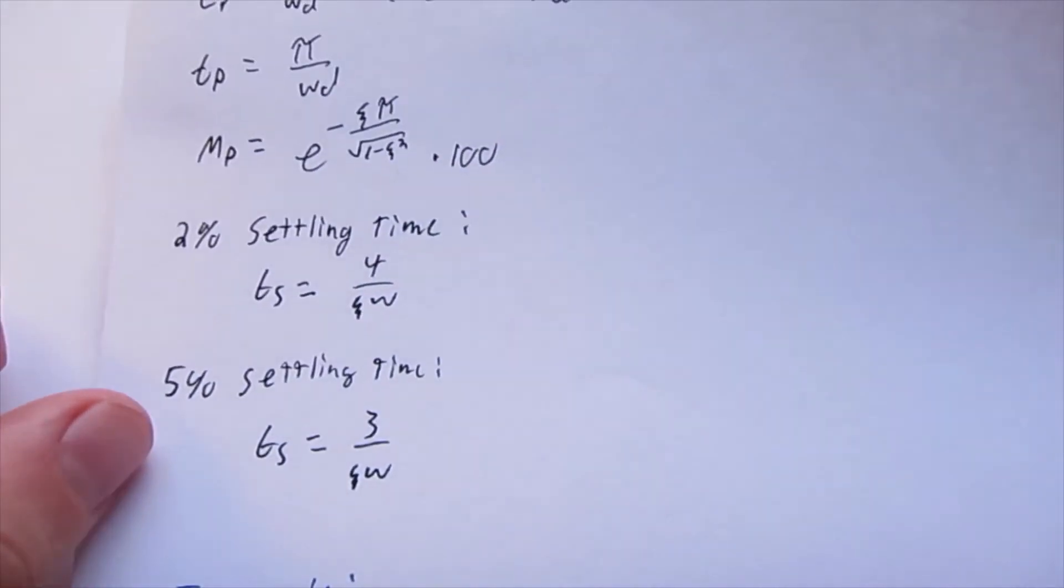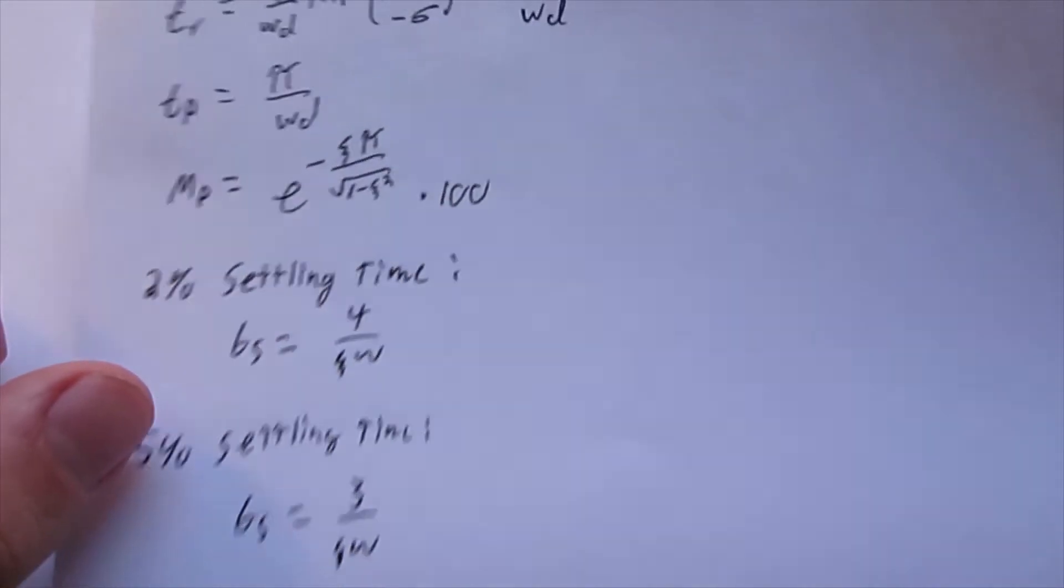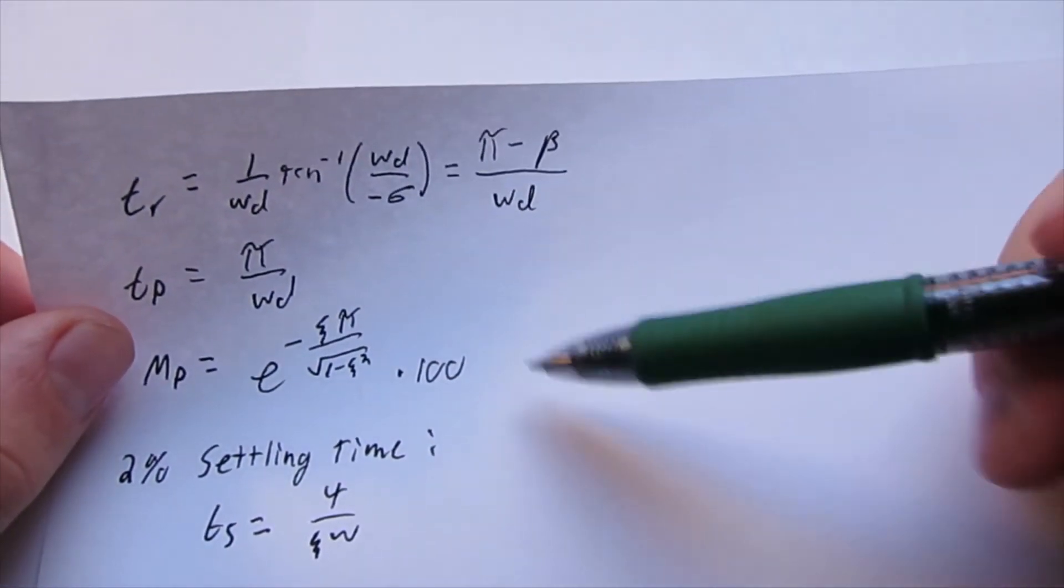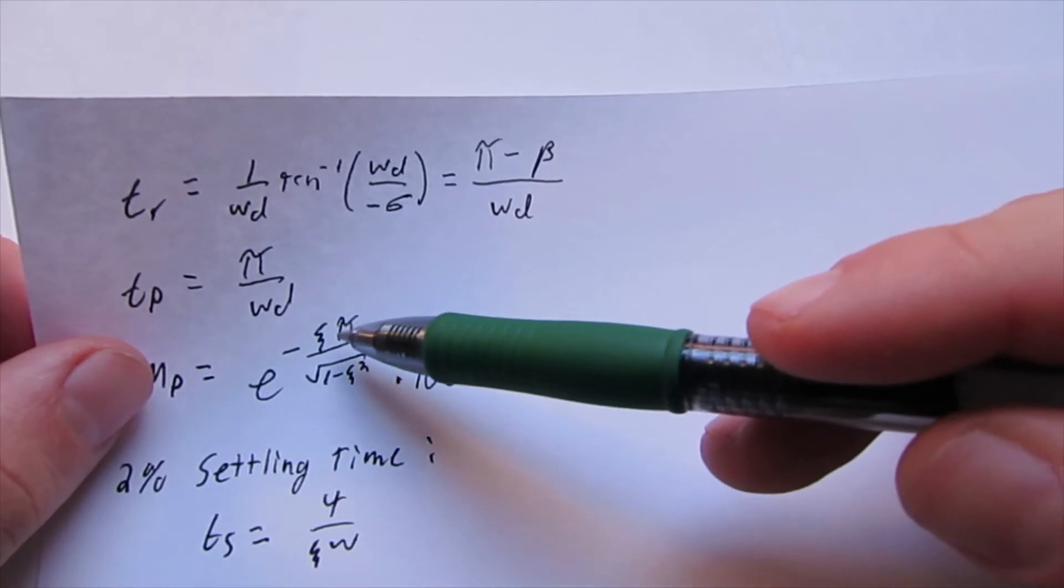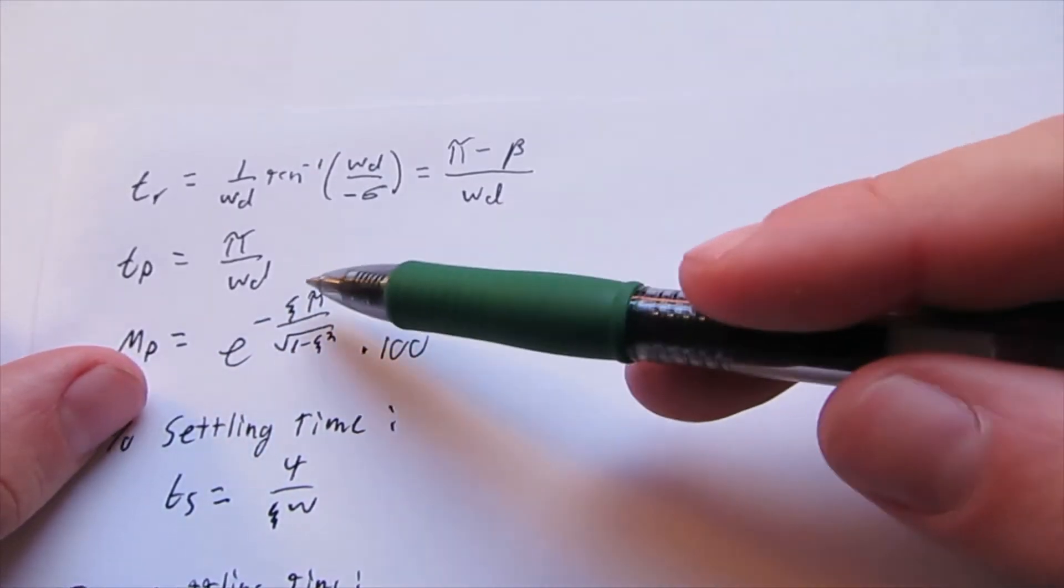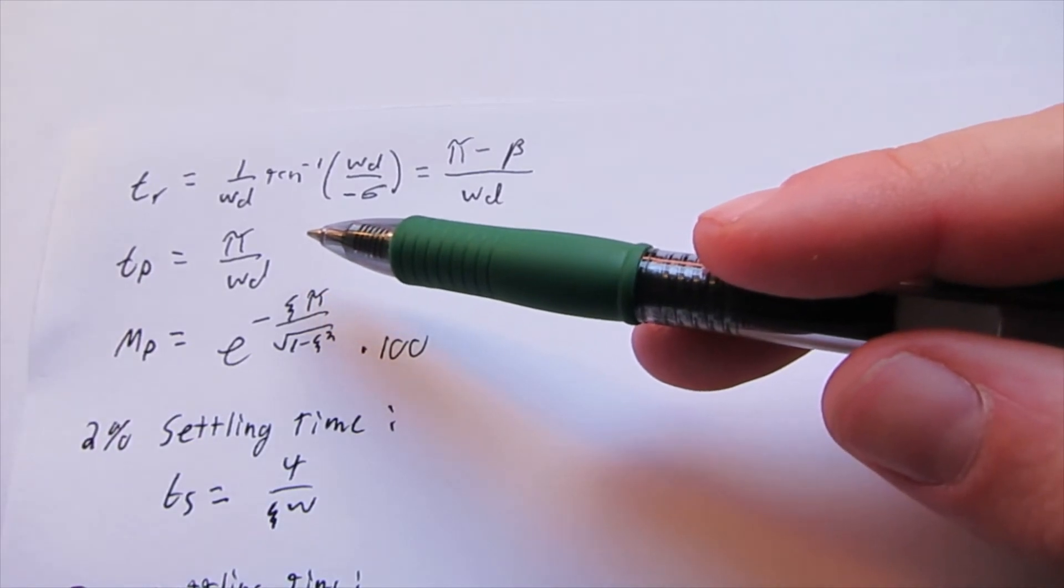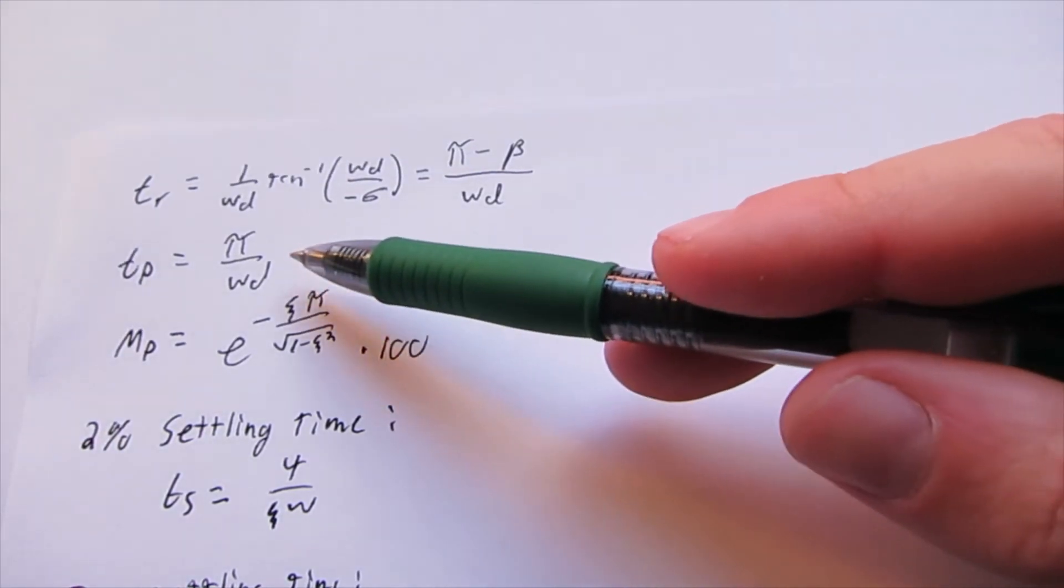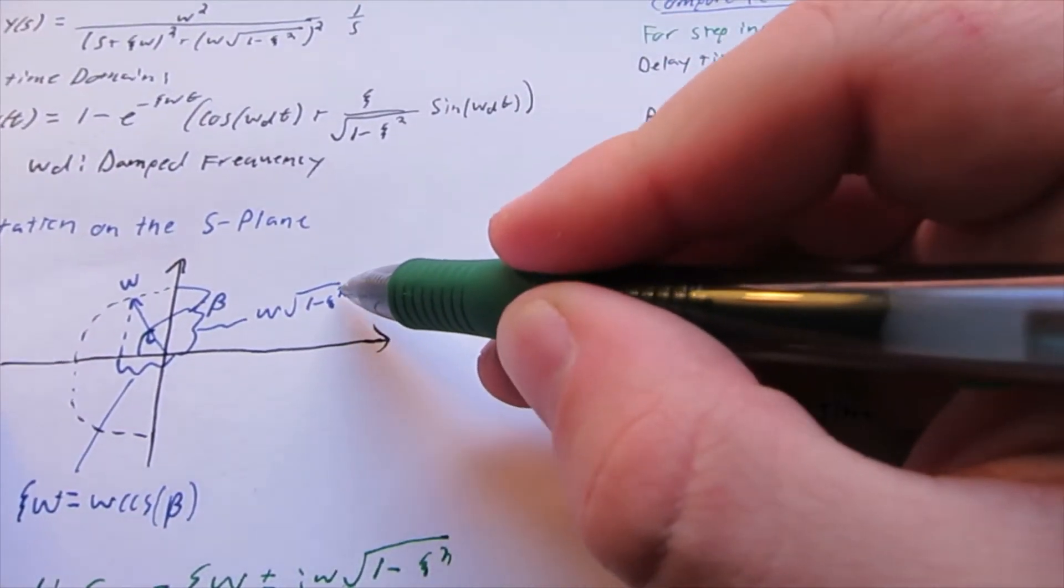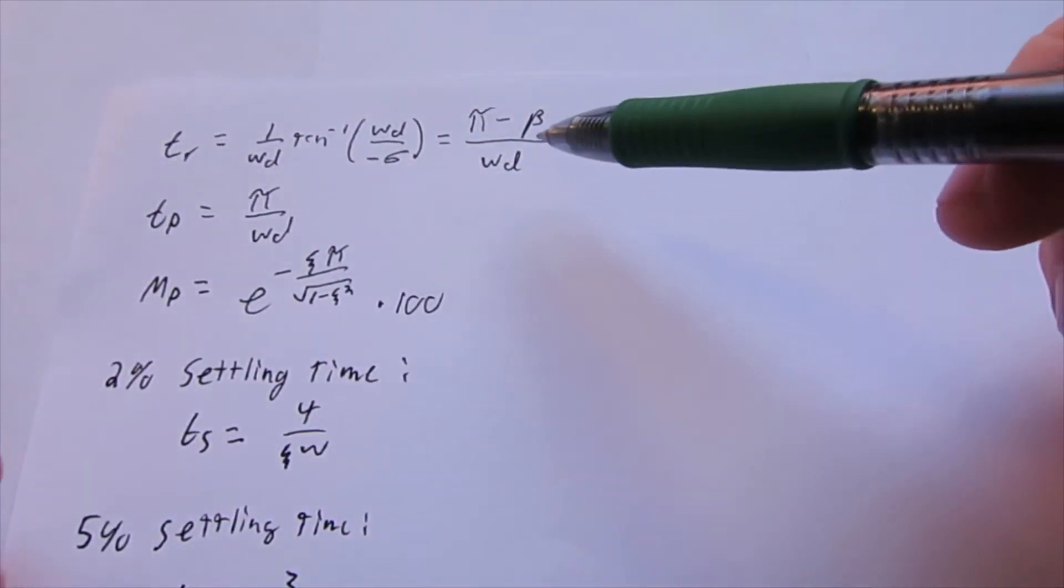So the equations for settling time, or to get the values for the settling times and the percent overshoot are very simple, because once you find your omega and zeta, you can just plug them all into these equations and get the values you want. The peak time is a little bit more confusing because we have the pi over omega d, but remember what is our omega d.